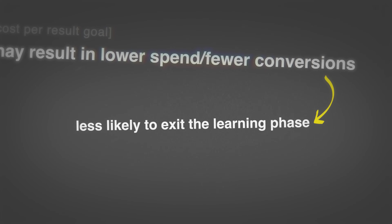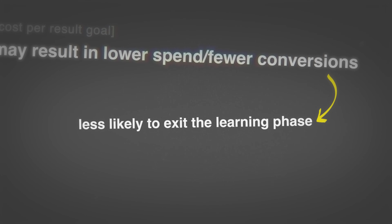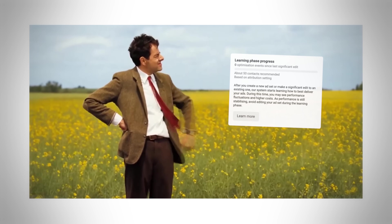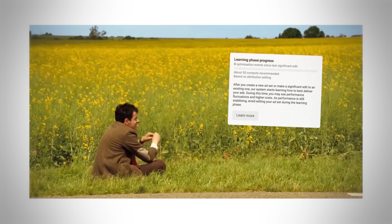Secondly, if you have lower spend and fewer conversions, you're less likely to exit the learning phase — it's going to take you longer to get out of it. When it comes to campaigns optimizing themselves through Meta's AI, or you as an advertiser learning by comparing cost per result across ads, data is required in both scenarios. If you spend less and get fewer conversions, it takes longer for that data to come through. Maybe you decide that's worth it, but just be aware it might take longer to exit the learning phase and longer to optimize your campaigns to peak performance.